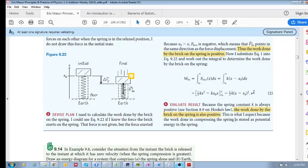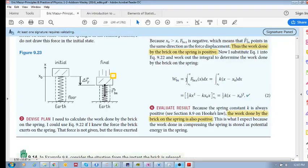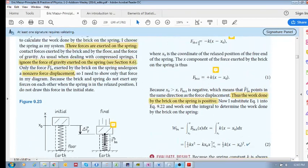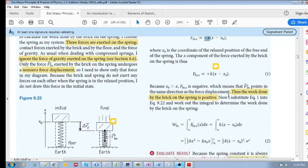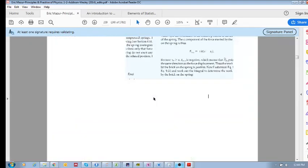What would the work be by the spring? What would the work be done by the spring? Well, all you would need to do is replace this function with this function. So there's a minus there. So you'd put a minus inside there, and you would end up with a minus out here, which means that the work by the spring would be negative. Okay?